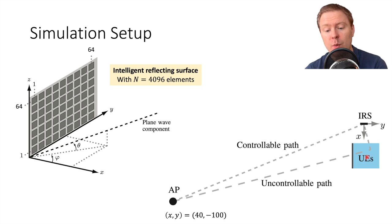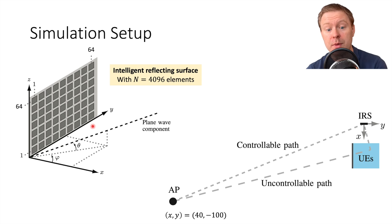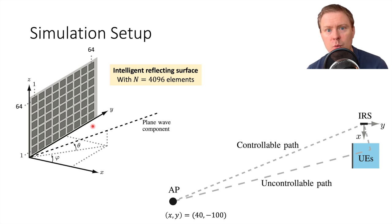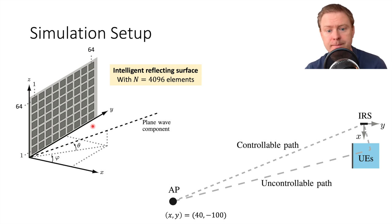When it comes to modeling the channels, array response vectors associated with arrays of this type were utilized. The geometry was used in addition to random delays and random scattering losses on different objects.